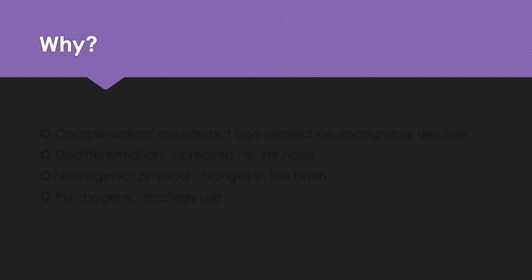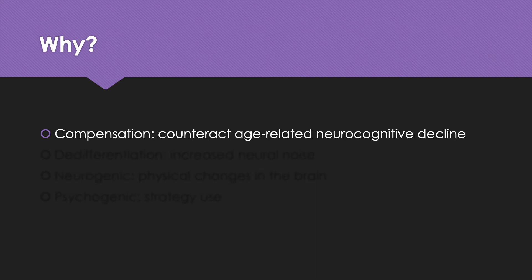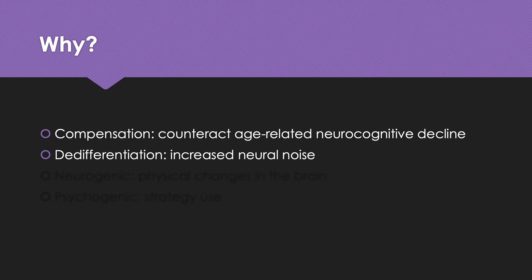So why is this happening? There are a lot of different views. In this lecture, I'll make the case that it really does seem to be compensation causing this neural recruitment. One view is that compensation counteracts age-related neurocognitive decline — if there's less gray matter in the prefrontal cortex for older adults, they can recruit areas in the other prefrontal cortex in the opposite hemisphere. Another idea is that it's essentially just random noise — the de-differentiation hypothesis — suggesting the activation in those other areas isn't actually helpful and may even hinder performance.